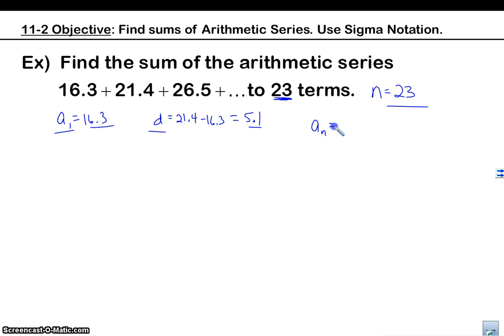Okay. So now I have d. I have a_1. I have n. I need a_n, which is a_1 plus (n minus 1) times d. You're saying, man, that formula again? Come on. What are you doing with that formula? Well, we've got to use it, right? That's the one we have to keep using. All right. 16.3 plus 22 times 5.1. You're probably, some of you are saying to yourself, this is a lot of work. Well, you know what, sometimes we've got to work. Okay, 128.5.